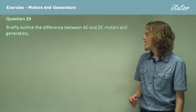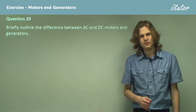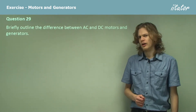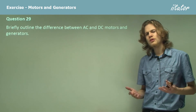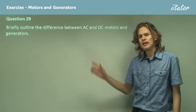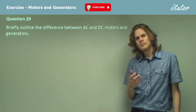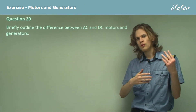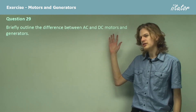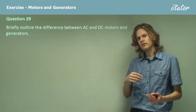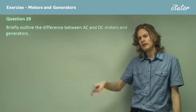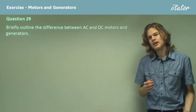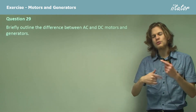Briefly outline the difference between AC and DC motors and generators. Alright, so let's have a bit of a think about them. AC obviously has to be alternating current, which means that the current will be going back and forth through the coil as it turns. In DC motors, the current will always be flowing around in the same direction and will use a split ring commutator in order to make it continuously turn.